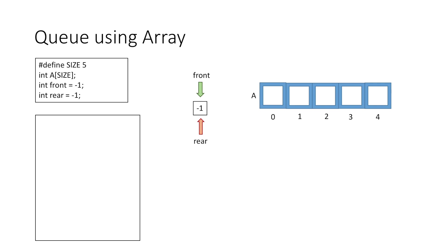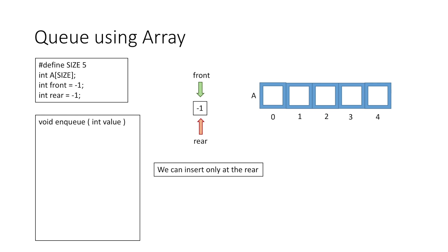Now let's see how we will insert an element in the queue. For that we will create our enqueue method which takes as argument an integer value to be inserted into the queue. From the concept of queues we know that we can only insert a value at the rear, but initially rear has the value -1 which is an invalid index in the array. So to insert an element, first we will increment rear and then insert the value at rear.